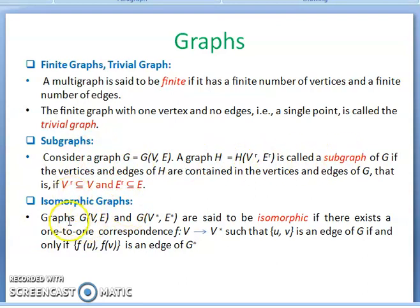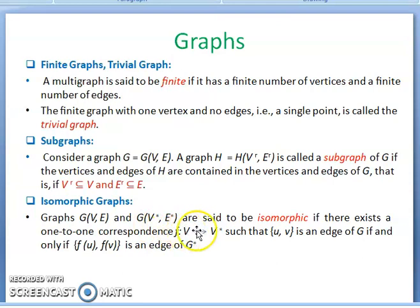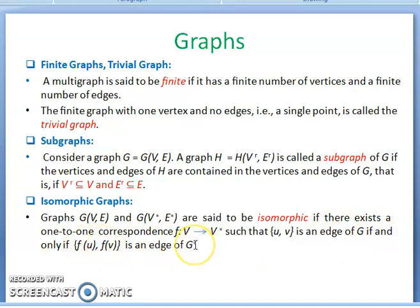Isomorphic graphs. Graphs G(V, E) and G*(V*, E*) are said to be isomorphic if there exists a one-to-one correspondence — a function F from V to V* — such that UV is an edge of G if and only if F(U) and F(V) is an edge in G*. This is the way to find out whether graphs are isomorphic.